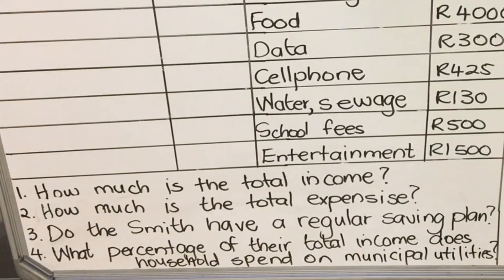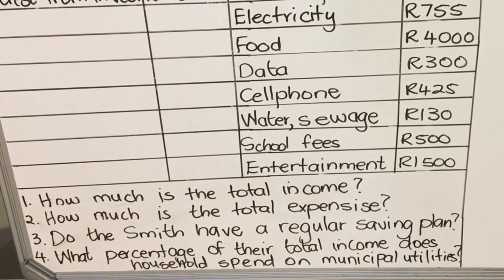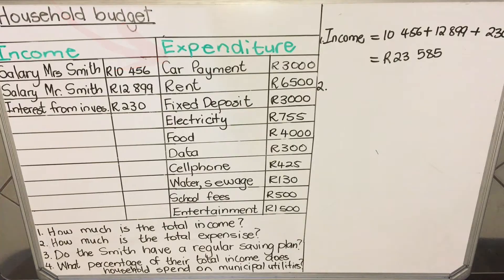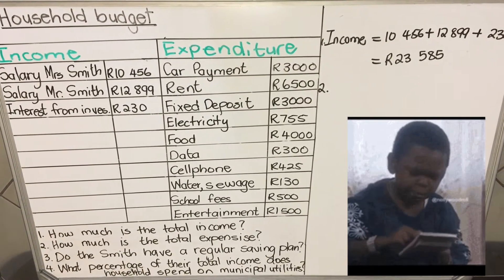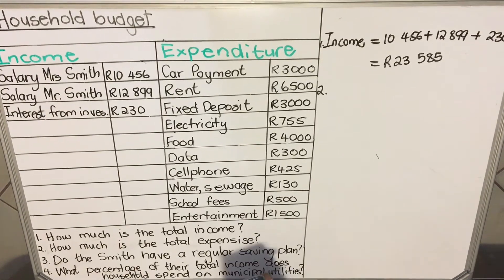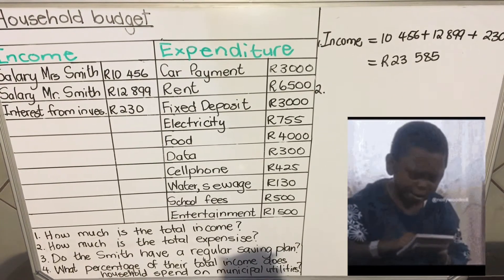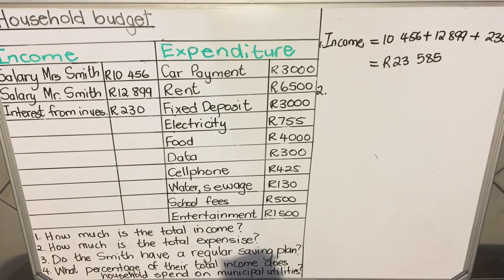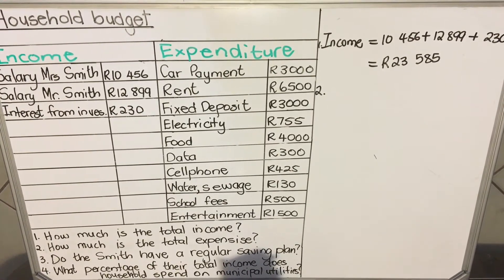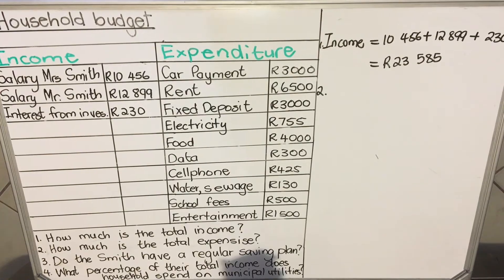The second question: how much is the total expenses? Expenses is the money that goes out of the family. The items are: a payment of 3,000; rent 6,500; fixed deposit 3,000; lights 755; food 4,000; butter 300; cell phone 425; water and sewage 130; school fees 500; and entertainment 1,500.